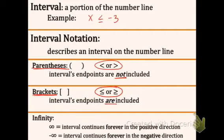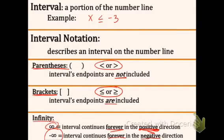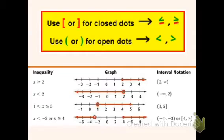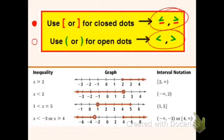And then there's infinity — positive infinity and negative infinity. Use positive infinity when the interval continues forever in the positive direction, and negative infinity when it goes forever in the negative direction. Summary: use brackets for closed dots — when you're including the endpoint, the symbols have a line underneath. Use parentheses for open dots — when there is no line underneath the inequality symbol. Whenever you use infinity, always use parentheses. Below is a summary of an inequality, a graph, and interval notation.